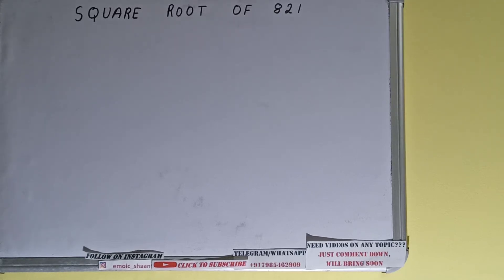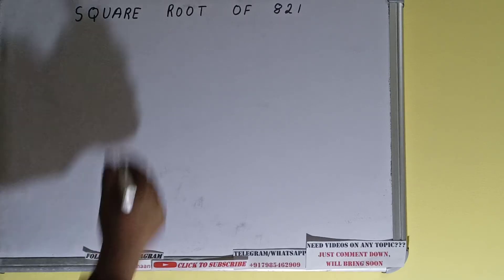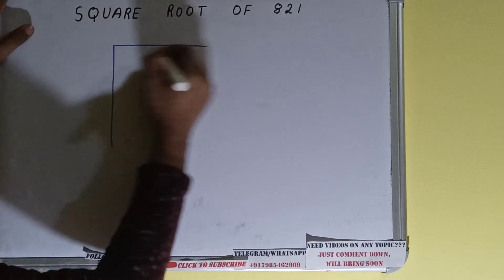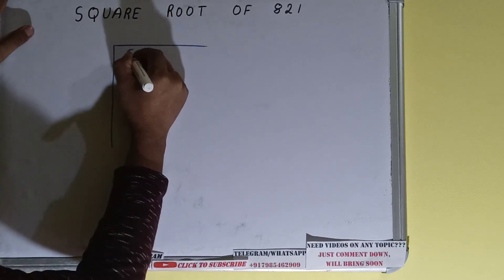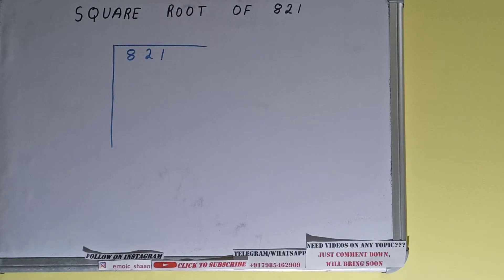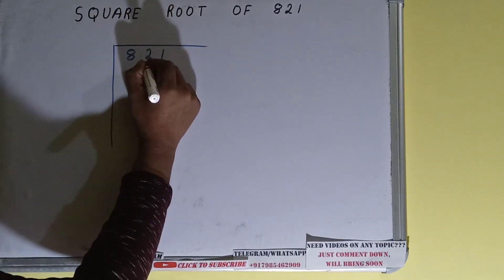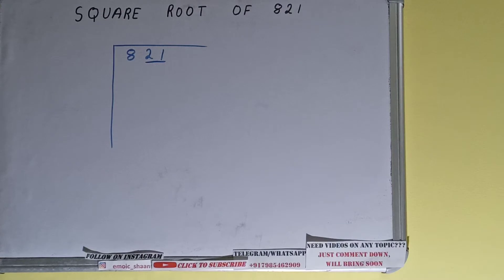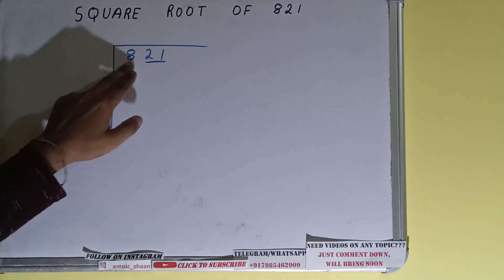Hello friends. In this video I will be helping you with the square root of the number 821. We'll be using the division method. First we need to write the number, then form pairs from the right hand side. Only one pair can be formed and this 8 will be left out. So first we'll divide this 8 and then bring down the pair.